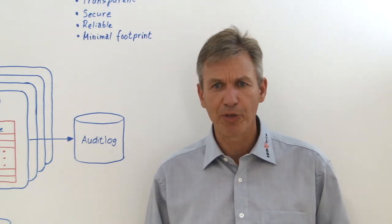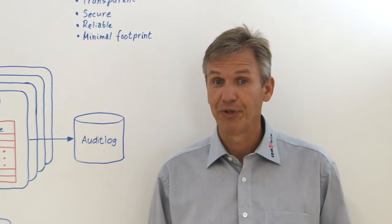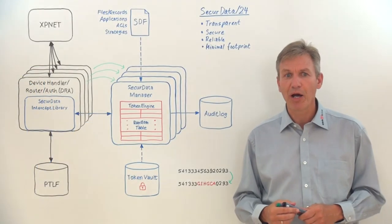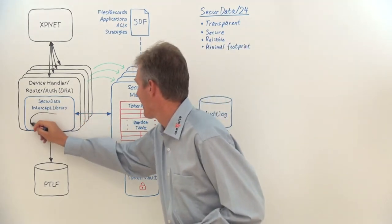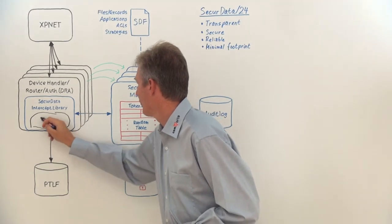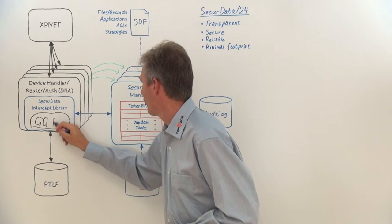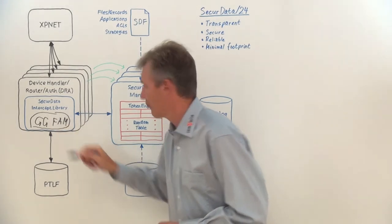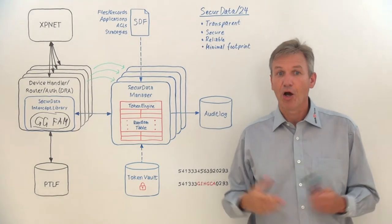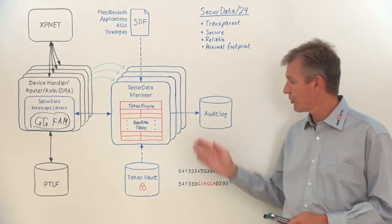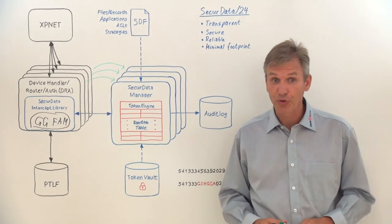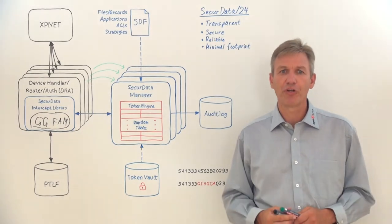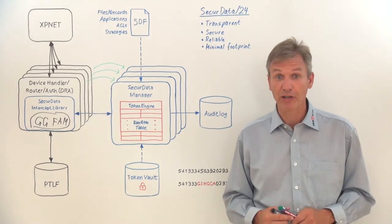Another frequently asked question is, will SecureData work with my data replication solution? Yes, it will. The SecureData intercept library can be combined with any other replication intercept library. For example, here you could use GoldenGate or the FAM library of DR.NET. On the backup system, you simply run an identical installation of SecureData with a copy of the token vault. Due to the stateless tokenization engine, all disaster recovery scenarios can be easily supported, including Active-Active mode.